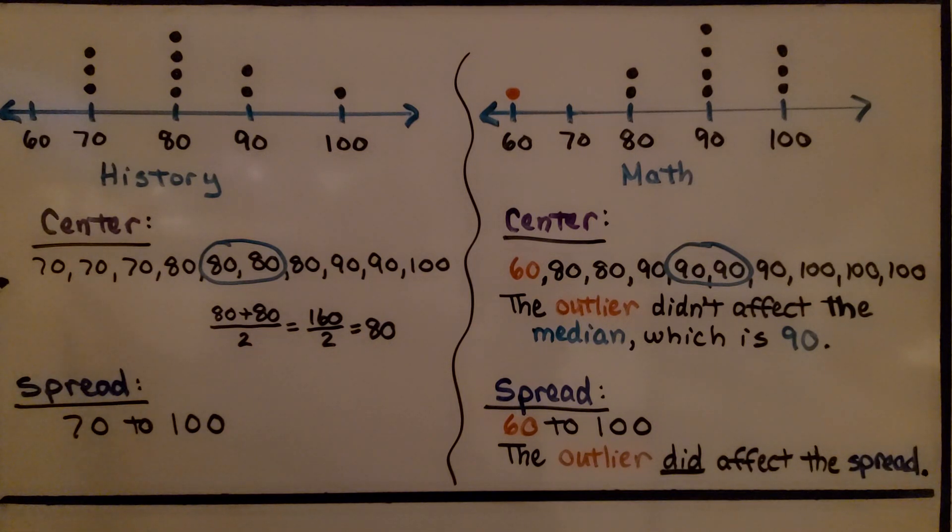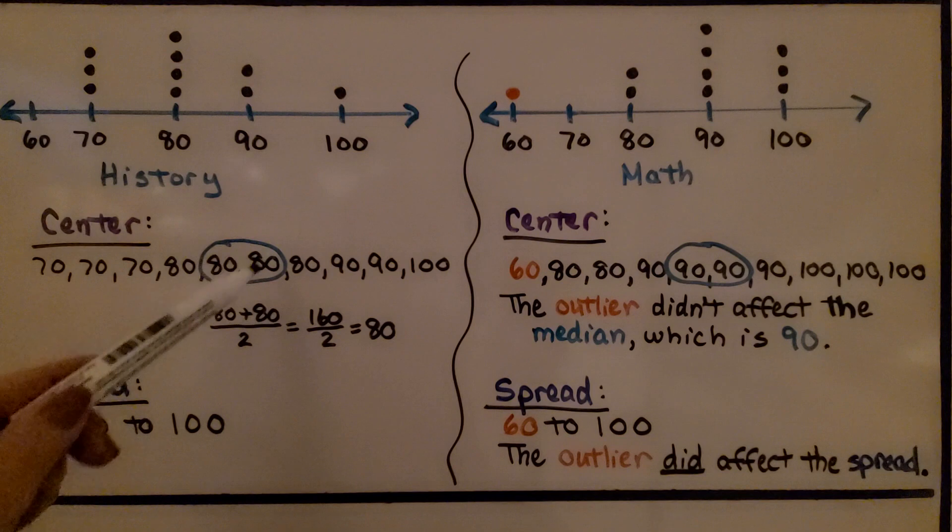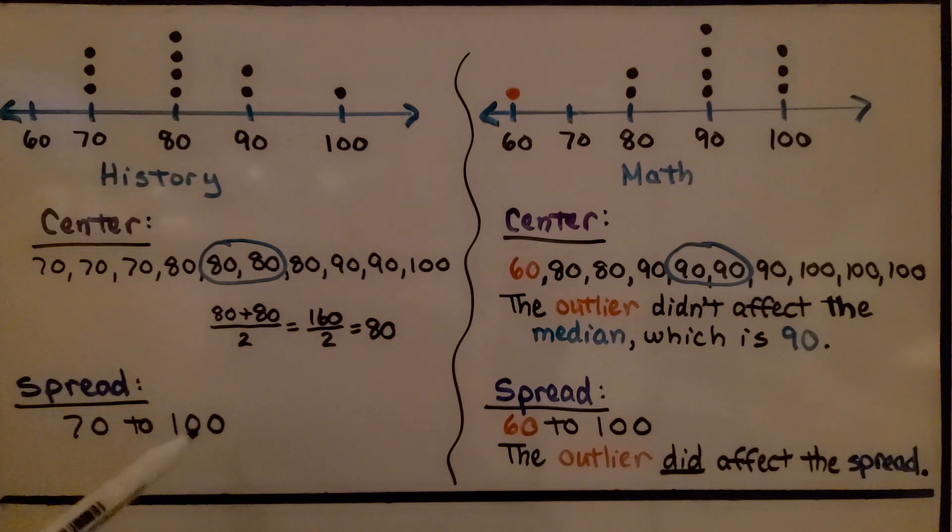For history, we found the center by listing the values from least to greatest. We found that there were two middle values, so we found the average, the mean of those two values, which is 80. And our spread went from 70 to 100.